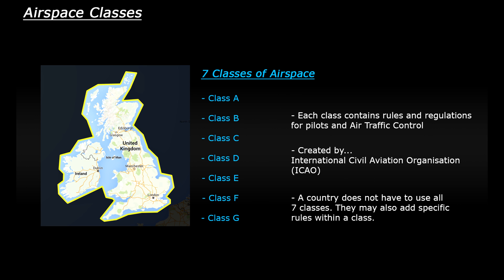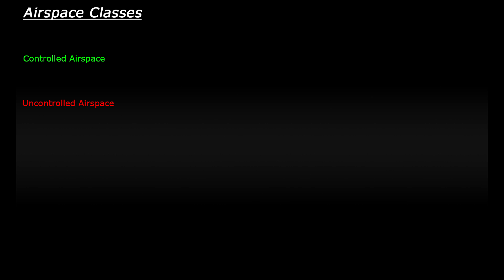For example, a country does not have to use all seven classes to control their airspace — they may only use four out of the seven. A country can also add specific rules to their airspace regulations. What we're going to do is explain the basic differences between the seven classes as defined by the ICAO. The seven classes fall into two main categories: controlled airspace and uncontrolled airspace.